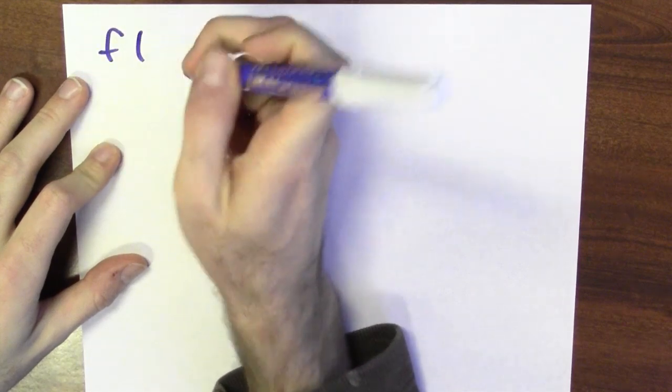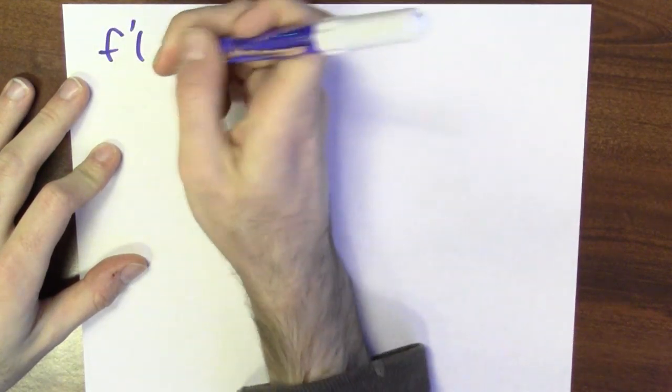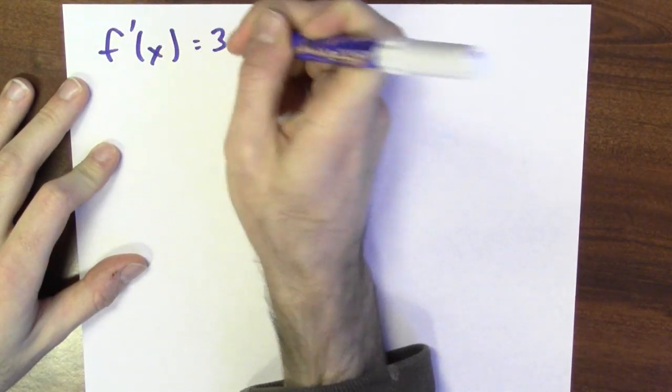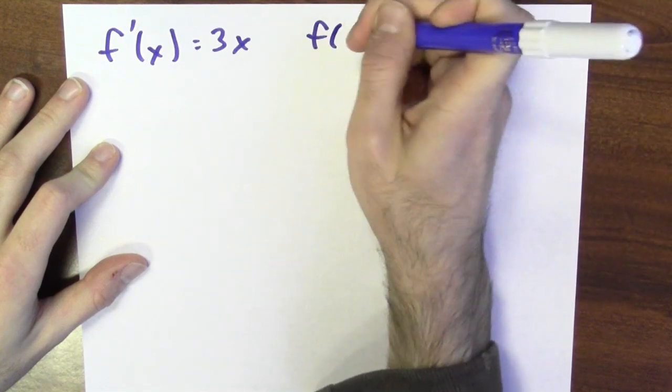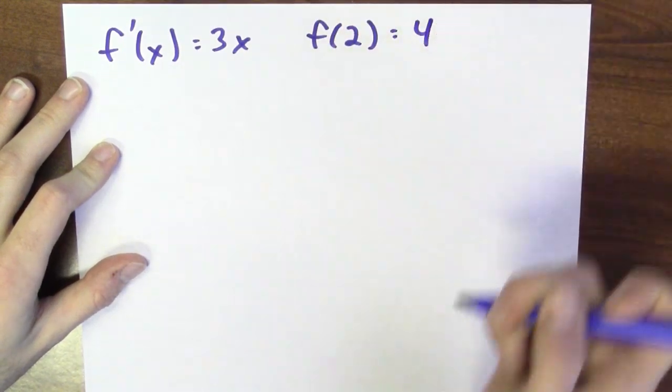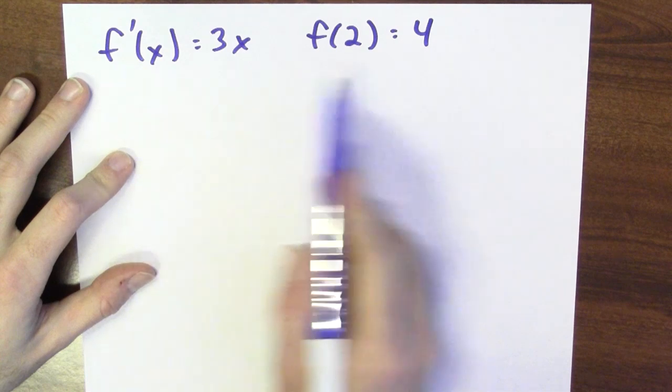Instead of starting with the function and trying to figure out the derivative, we could imagine that we know a little bit of information about the derivative and try to figure out something about the function. Let's make up a concrete example. Suppose that I've got some function f and all I know is that its derivative is 3x and its value at 2 is 4.